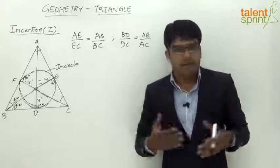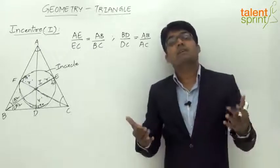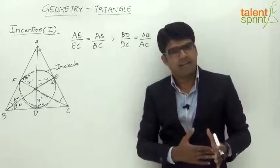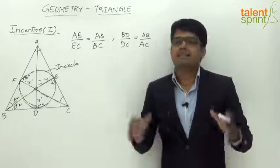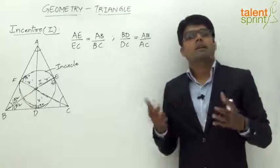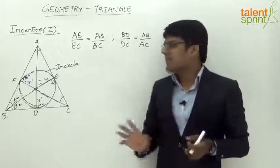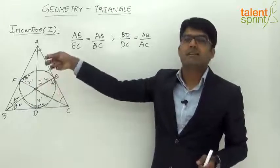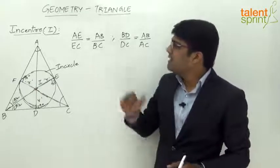Unlike the orthocenter and circumcenter, whose positions change based on the type of triangle — lying outside for obtuse triangles, inside for acute triangles, and on specific points for right triangles — the incenter always lies inside the triangle, regardless of the type. Whether the triangle is equilateral, scalene, right-angled, obtuse, or acute, the incenter is always inside, because the incircle must touch all three sides internally.